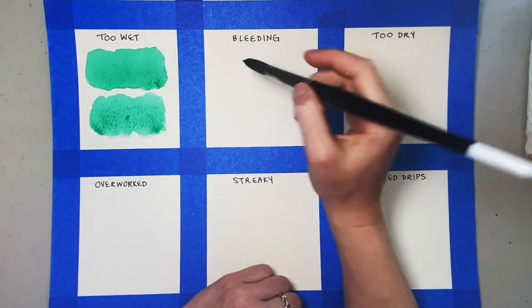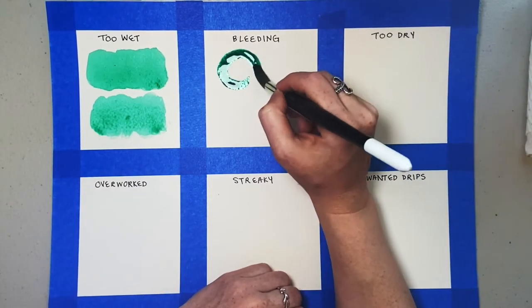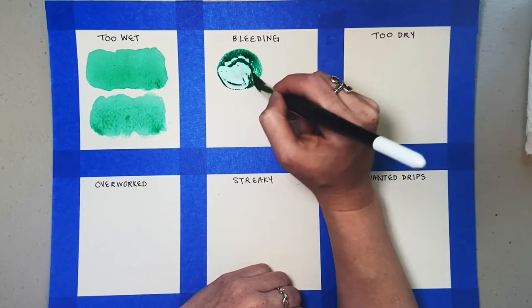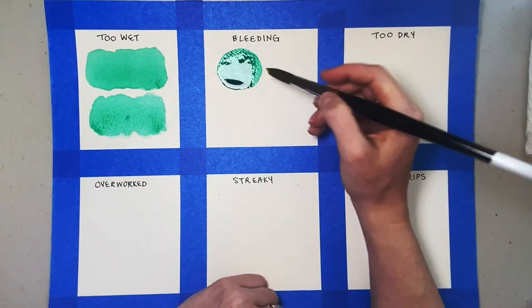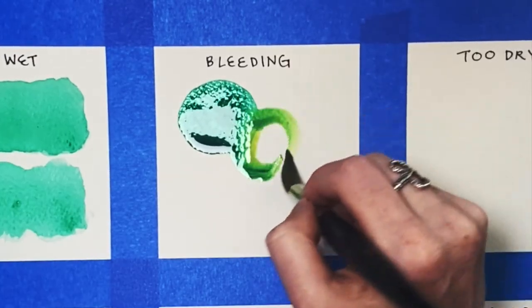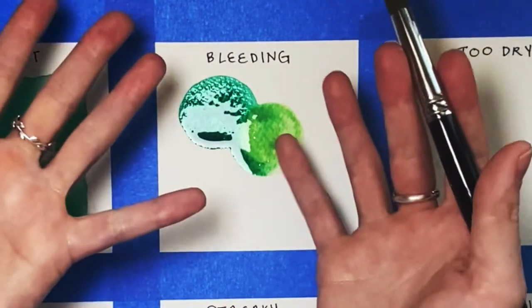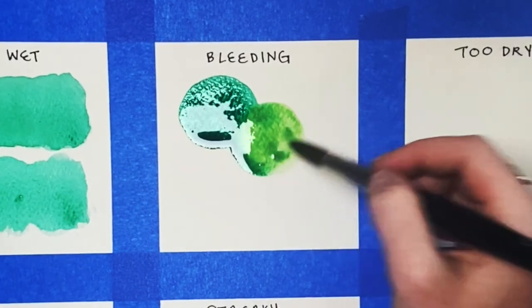Next, let's talk about bleeding. This can happen when your wash seeps into another wash next to it. This can be a great technique if you want your colors to mix together and create a hazy or ombre effect like a sunset, but not so great if you don't want your colors mixing.